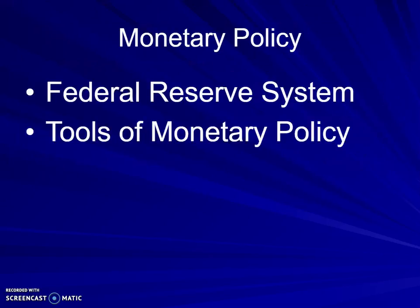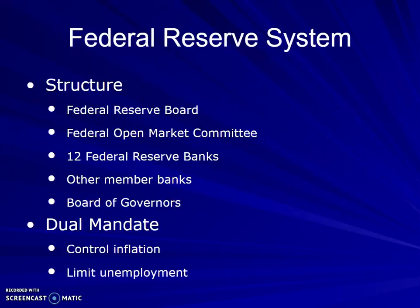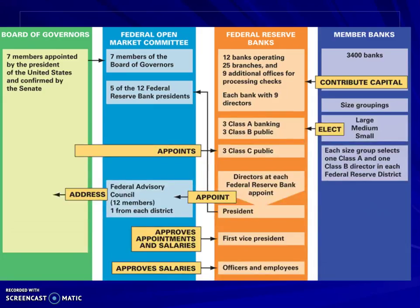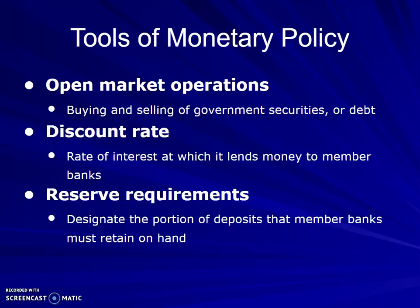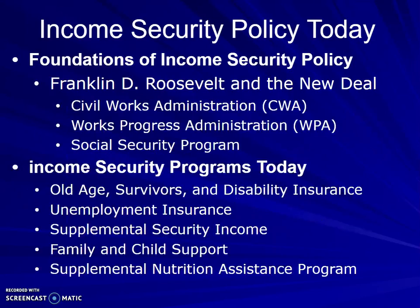When looking at monetary policy and the Federal Reserve System, the Federal Reserve has 12 Federal Reserve banks and other member banks. They have a dual mandate: to control inflation and to limit unemployment. The tools of monetary policy include open market operations — the buying and selling of government securities or debt. There's the discount rate, which is the rate of interest at which it lends money to member banks. There are reserve requirements, which say how much of deposits the banks have to keep on hand, keeping banks from collapsing if people need to withdraw money.